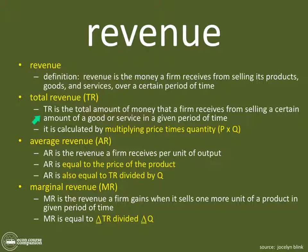Total revenue is the total amount of money that firms receive from selling a certain amount of a good or service in a given period of time, and it's calculated by simply multiplying price times quantity. You've been doing this all throughout economics. If I sell pizzas and I sell one pizza and I get $10, what's my revenue? $10 — it doesn't mean I'm profitable, it just means I have $10 now. If I sell two, what's my revenue? $20. If it's 10, it's $100. So that's total revenue.